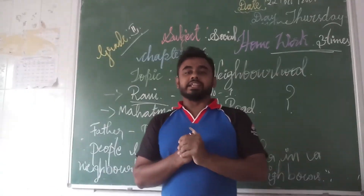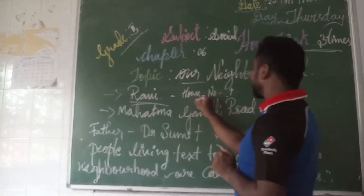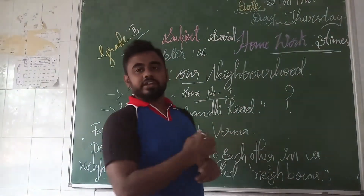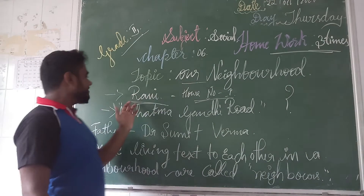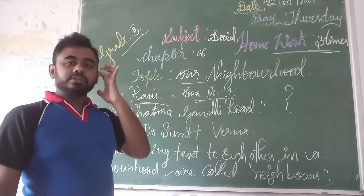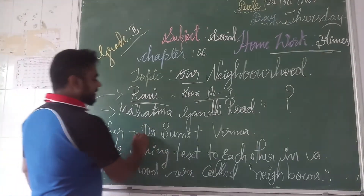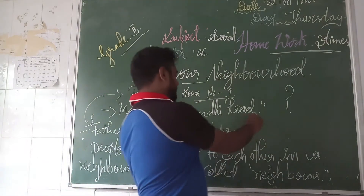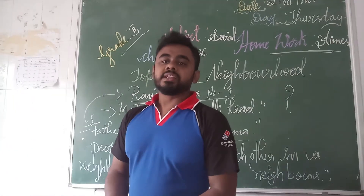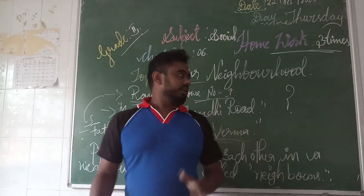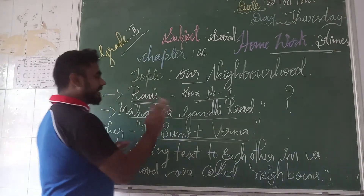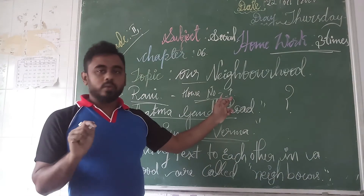Who is Ravi? Ravi lives in House Number 1. Where does he live? He lives in House Number 1. The area is Mahatma Gandhi Road. His father's name is Dr. Sumit Verma.